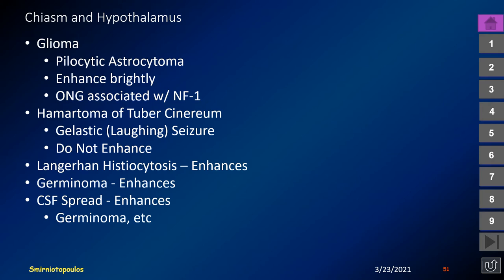We can also have gliomas arising in the region of the hypothalamus or chiasm — typically pilocytic astrocytomas that enhance very brightly. Optic nerve gliomas may be associated with NF1. A hamartoma of the tuber cinereum arises between the chiasm and mammillary bodies. These lesions do not enhance and are classically associated with gelastic or laughing seizures, though that's seen in only about 40% of patients. Langerhans histiocytosis, presenting with diabetes insipidus, should show contrast enhancement. We can also have primary suprasellar germinomas and CSF seeding from pineal region germinomas.